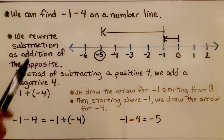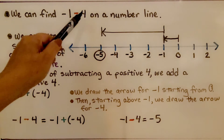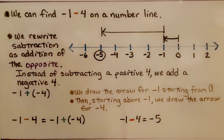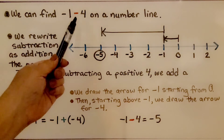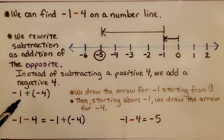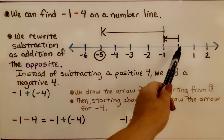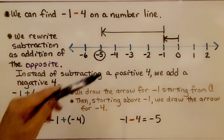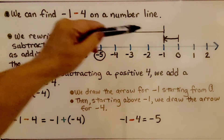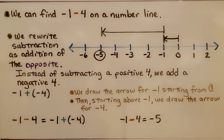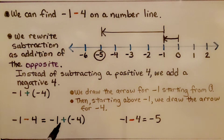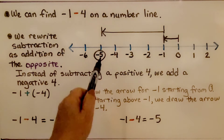We can find negative 1 minus a positive 4 on a number line. We rewrite this subtraction as addition of the opposite — instead of subtracting a positive 4, we add a negative 4. So we have negative 1 plus a negative 4. We draw the arrow for negative 1 starting from 0, go to negative 1, then starting above negative 1, we draw an arrow for negative 4 going 4 units to the left. Negative 1 minus 4 is equal to negative 5.